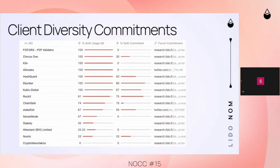The preliminary numbers looking at Q1 are that if all these Q1 commitments are met — which we'll see at the end of Q1 — then we're looking at Geth usage for the Lido curated set in the low 50s, around 52%, which is really encouraging. That will be the biggest jump so far — a really positive note to end on, and great job to all these node operators for taking that seriously.